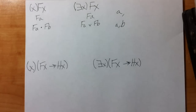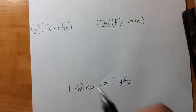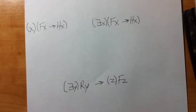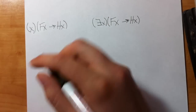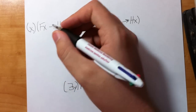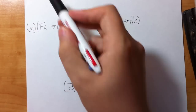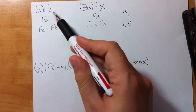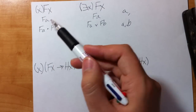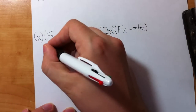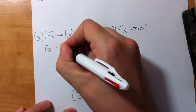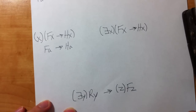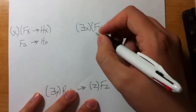The process doesn't change when we expand slightly longer quantified statements. For a one-element universe, I do the exact same thing — I chop off the quantifier and replace the variable x with the name A. So for a one-element expansion I get FA arrow HA.